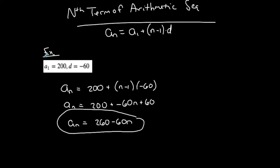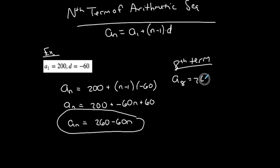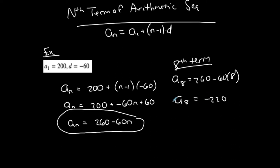This is my nth term for this particular arithmetic sequence. If I want to find any other term, let's say the 8th term, I could just plug in 8 for n: 260 minus 60 times 8. The nth term is an explicit formula that gives me the direct term number. So a8 equals negative 220 — the 8th term is negative 220.